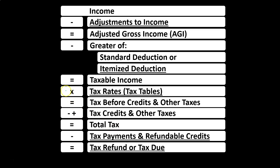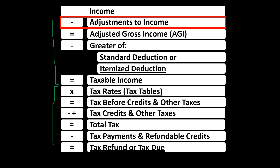When thinking about the income tax equation, we're going to be on the second line — the adjustments to income. We consider the income tax equation and break it into two halves: the first half being a modified income statement, and the bottom half being the calculation of the tax and then application of payments and credits to get down to the tax refund or the tax due.